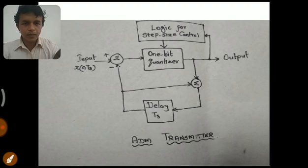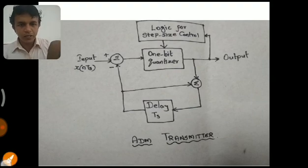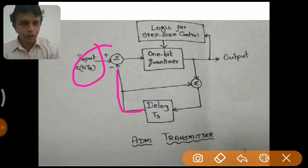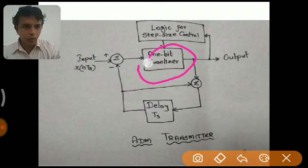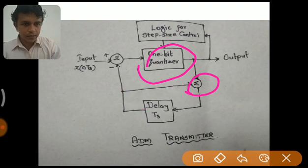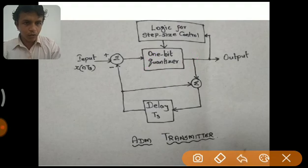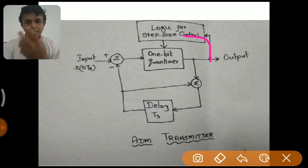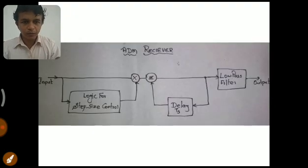In the transmitter, the output signal coming from the delay block is subtracted from the input signal, and that error is sent to the one-bit quantizer. The output of the one-bit quantizer is added with the output of the delay block and then given as input to the delay block. The output of the quantizer is also given to the logic for step size control, which helps the quantizer adjust the step size with respect to the input signal.